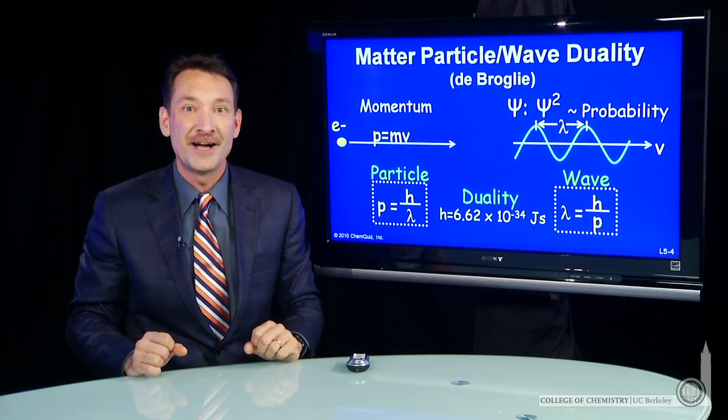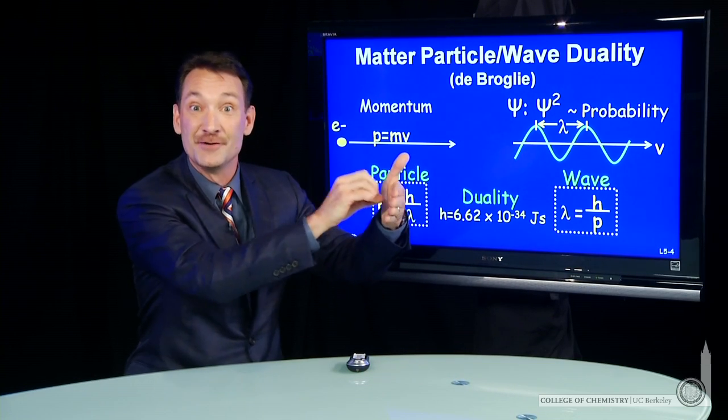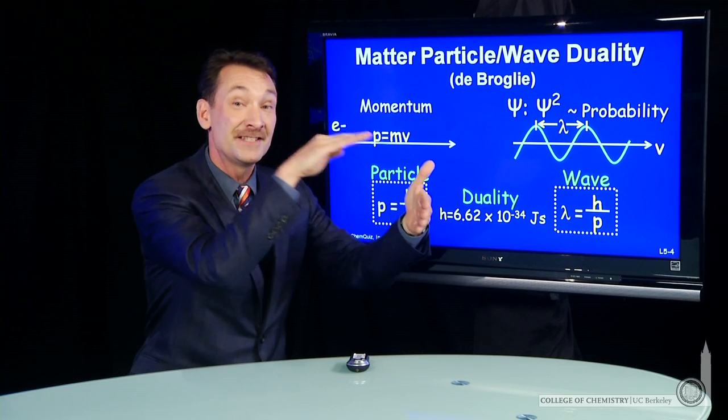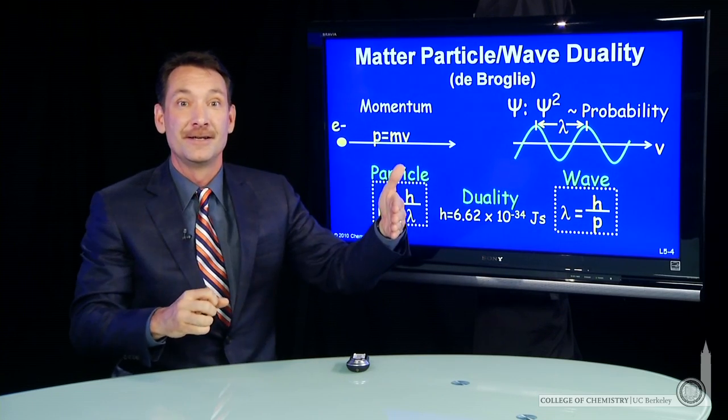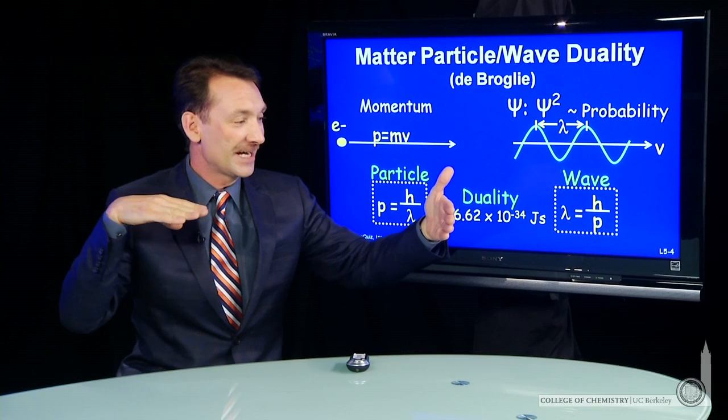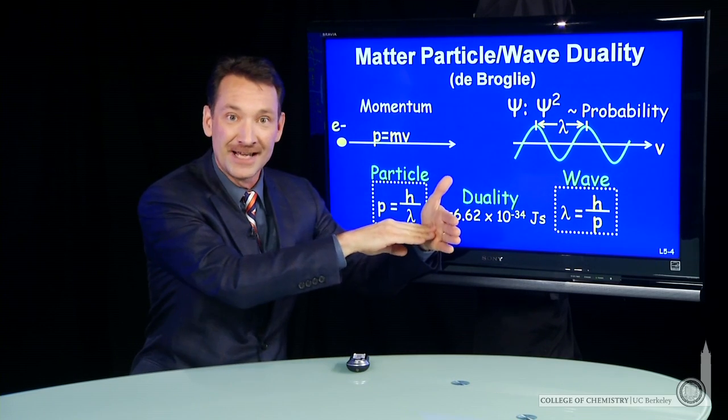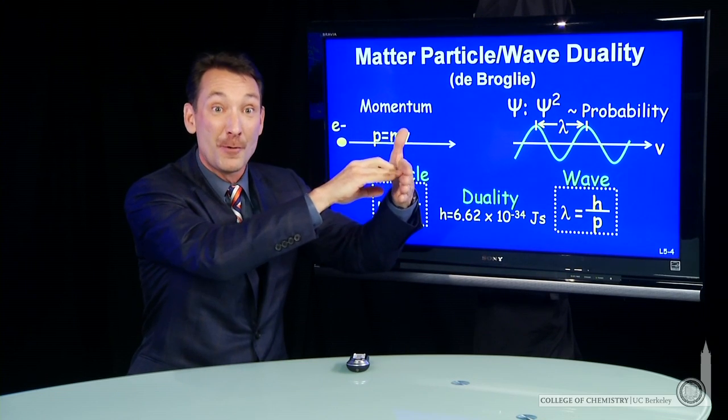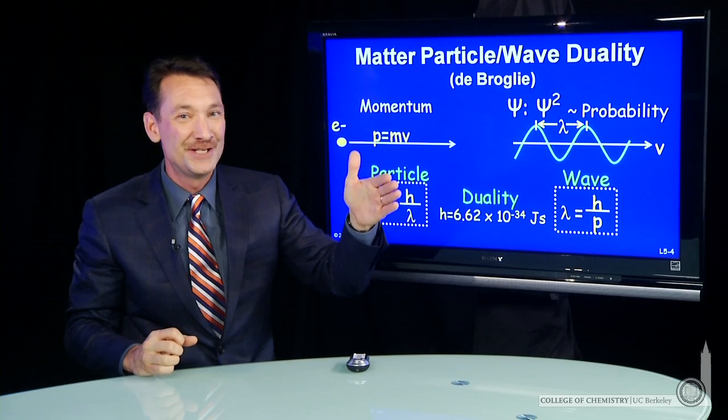And if you shine that on a screen like you did with the light, you find that there's places on the screen that the electrons hit, and you get bright spots, lots of electrons hitting in certain spots, and places on the screen where the light does not hit. The electrons pass through their grating, their crystal. It's very likely they'll hit at some spots. It's unlikely to zero probability that they'll hit at other spots. And that's very strange.